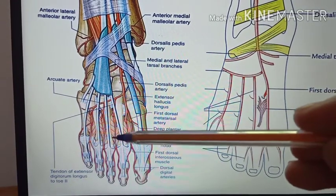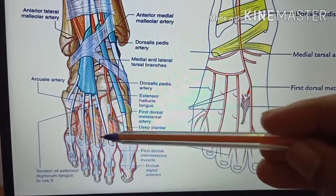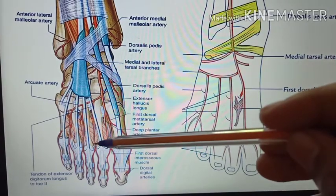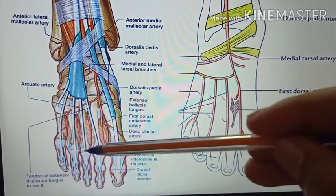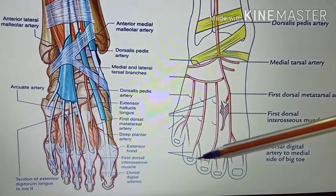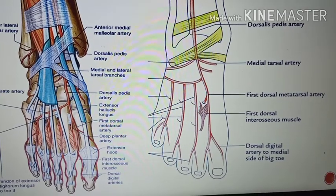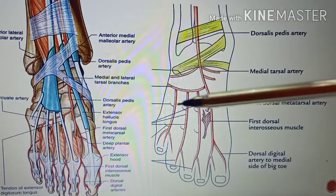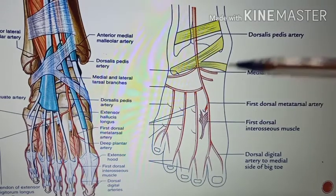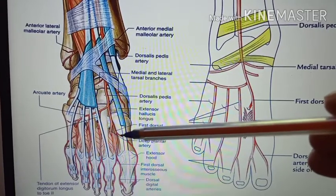Each dorsal metatarsal artery proceeds distally on the corresponding dorsal interosseous muscle, and at the cleft between the toes it divides into dorsal digital arteries. The dorsal metatarsal arteries anastomose with the plantar arch by three proximal perforating arteries and four distal perforating arteries.